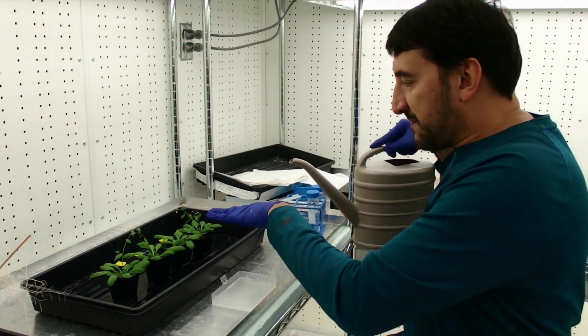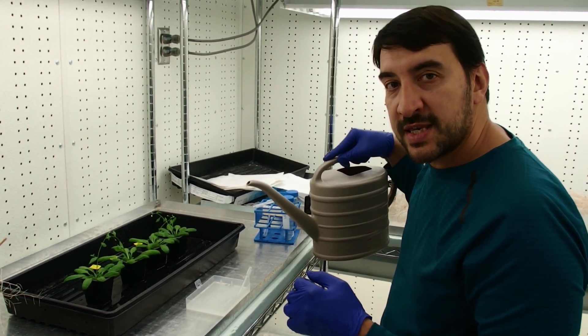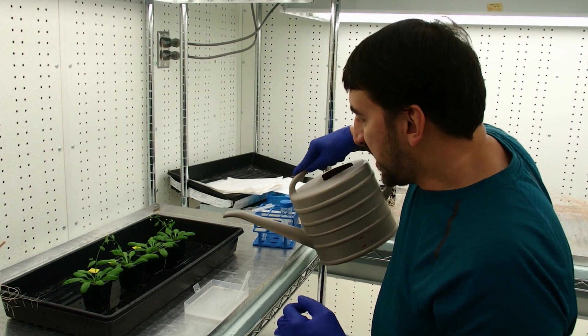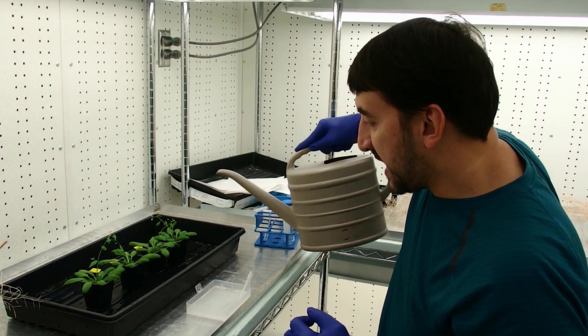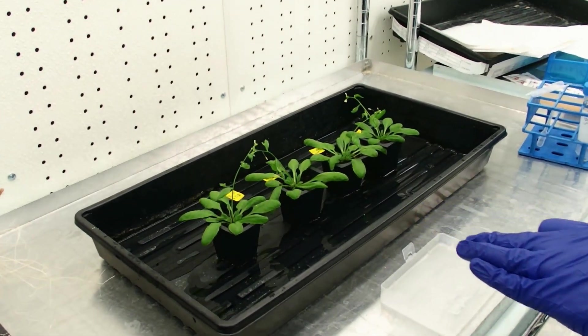So now I've dipped all of these plants and put some droplets on what will be the secondary inflorescences as well. And I'll add a little bit of water in the bottom of this tray so that the plants will be well hydrated.